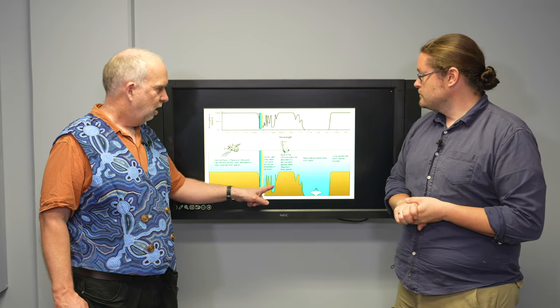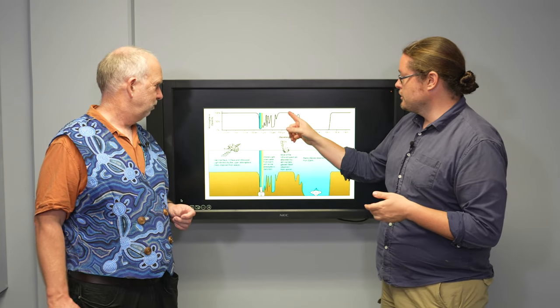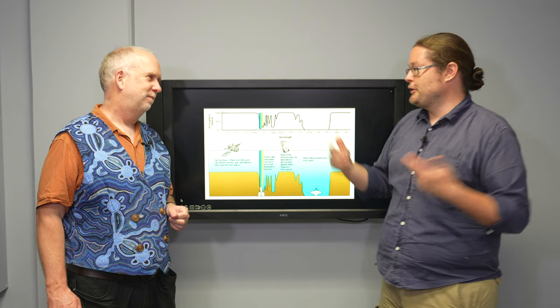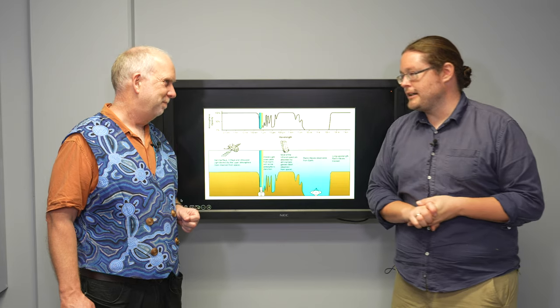That basically means visible light, a few particular windows in the infrared, or the radio. So even if you wanted to look in the x-rays and gamma rays, all you're going to see is just the outside, like the atmosphere.